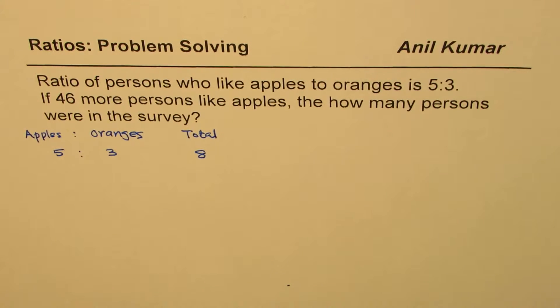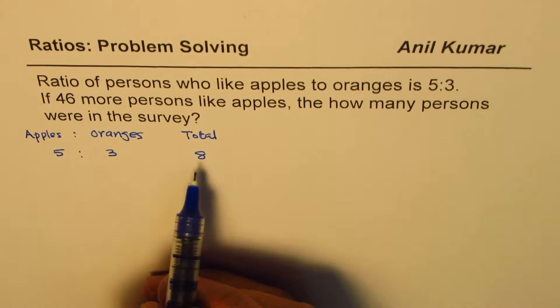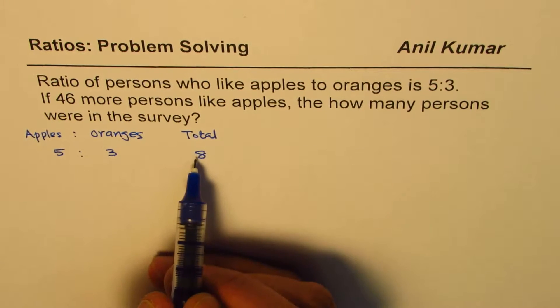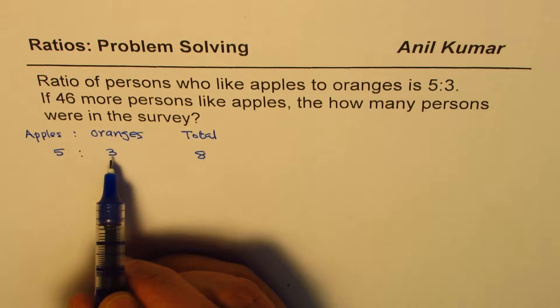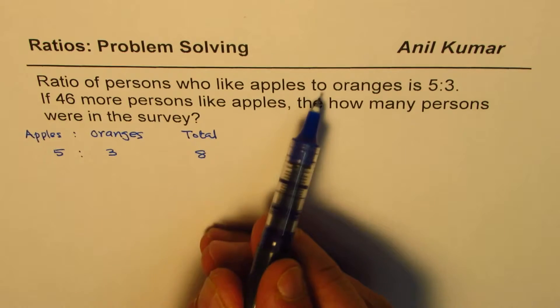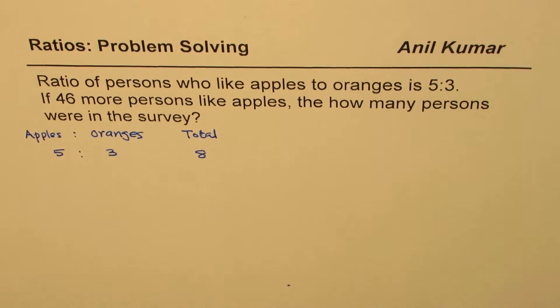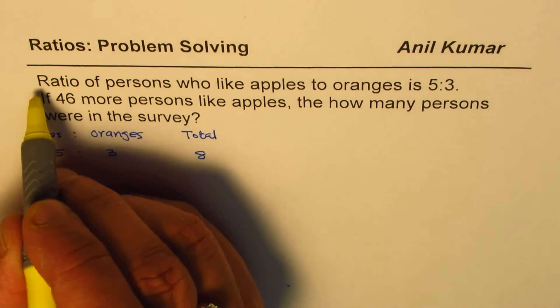Does it make sense? So that means out of 8, 5 like apples, out of 8, 3 like oranges. And therefore, the ratio of persons who like apples to oranges is 5 is to 3. So I hope this statement is clear.